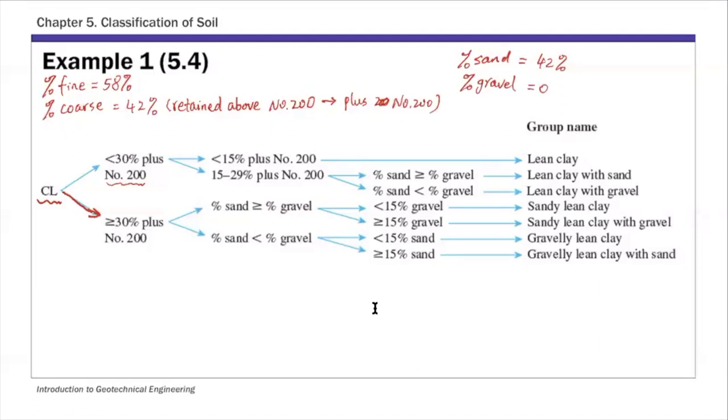Percent of gravel is zero. So we have more sands than gravels. We'll pick this route.